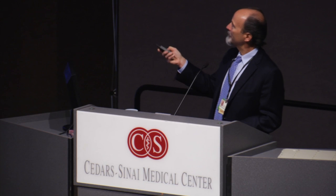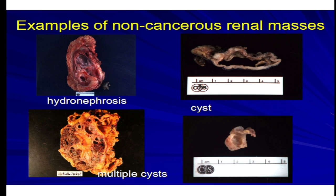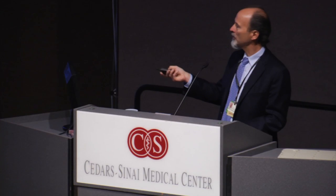Examples of non-tumorous masses include cysts. A lot of renal cysts, or areas where the collecting system is dilated — called hydronephrosis — or multiple cysts can look just like a renal cell carcinoma when resected, but in fact they're benign. There are also other types of tumors besides renal cell carcinomas. Angiomyolipomas are very common tumors — they could be big, multiple, or small at one or two centimeters — but they all look like fatty tumors and are not renal cell carcinomas.